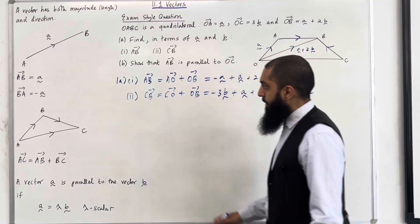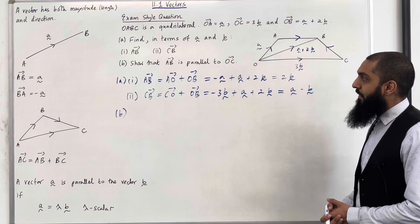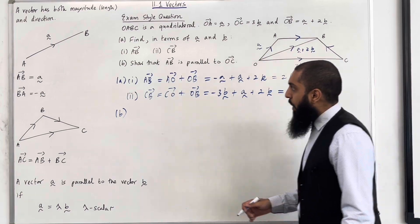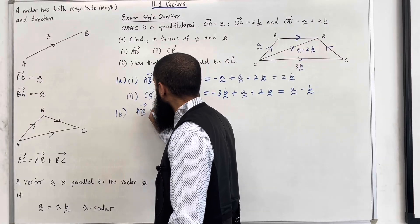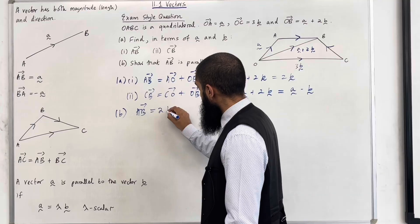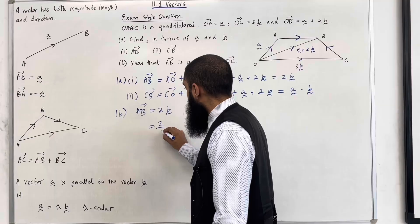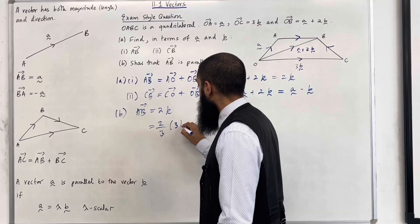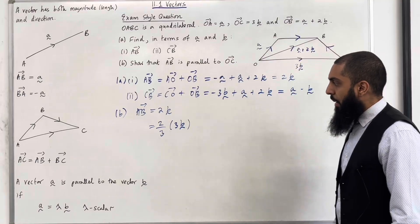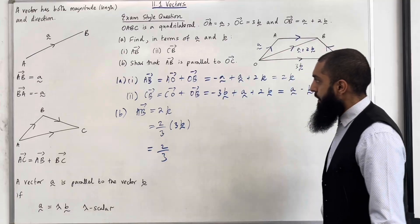Let's move on to part B. So ladies and gentlemen, now what we want to do is show that the vector A to B is parallel to the vector O to C. So what we have here is that the vector A to B is equal to 2B. This can be written as 2 over 3 lots of 3B. Okay, so 2 over 3 times 3B is basically 2B.